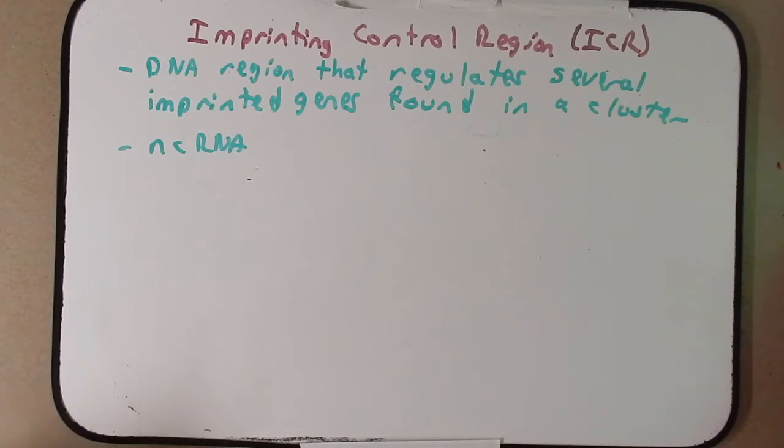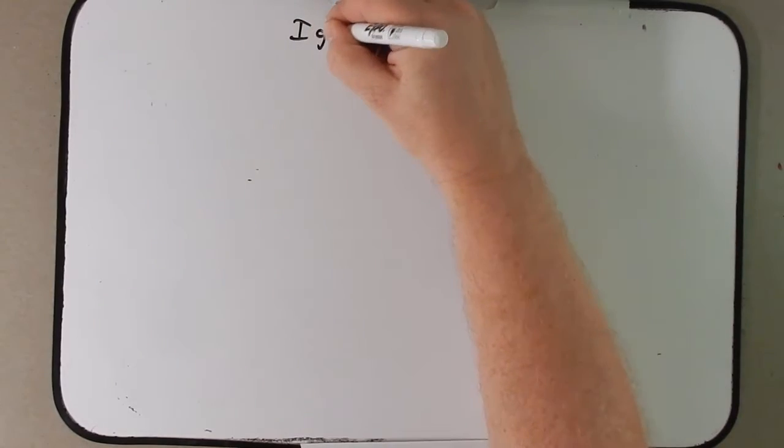In describing this imprinting control region, I want to bring back IGF2 and talk about that a little bit. Several boards ago we talked about how IGF2 was maternally imprinted and we saw the consequences of that, the good and the bad, but we didn't talk about how it was regulated. All right, so IGF2 revisited here.